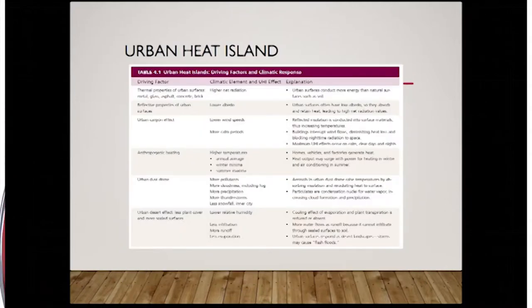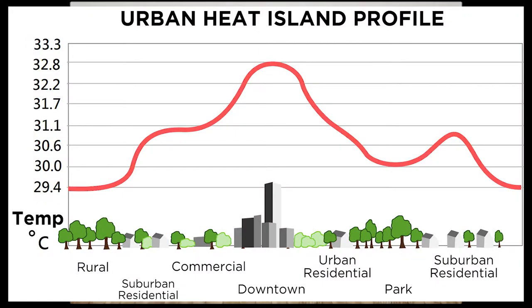The urban heat island effect occurs when a city experiences much warmer temperatures than nearby rural areas. The sun's heat and light reach the city and the countryside in the same way, but the difference in temperature between urban and rural areas has to do with how well the surface in each environment absorbs and holds heat.